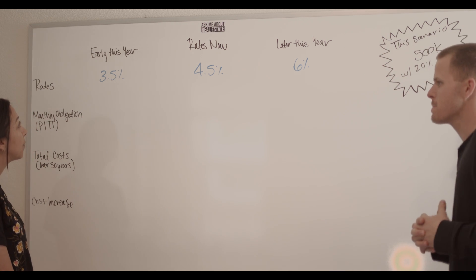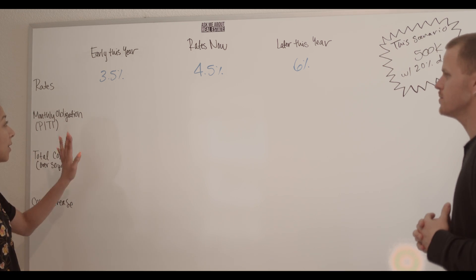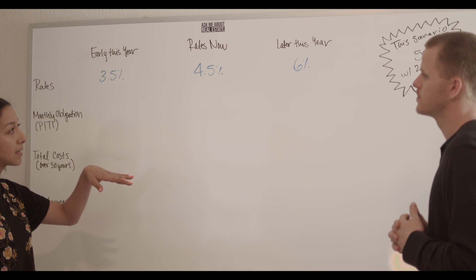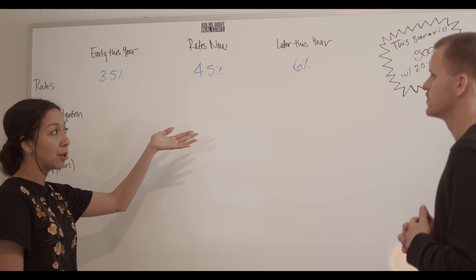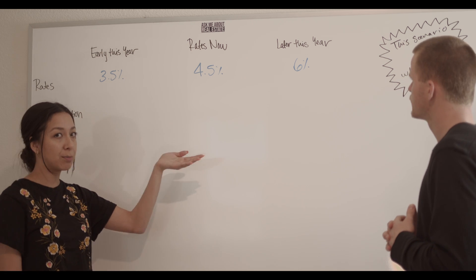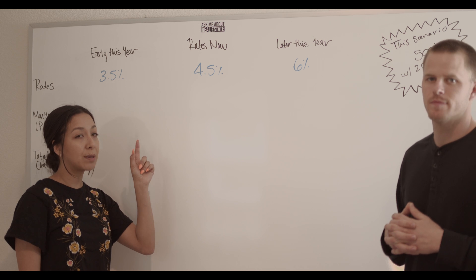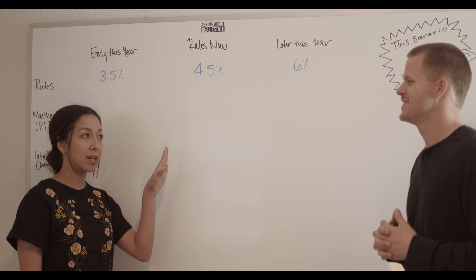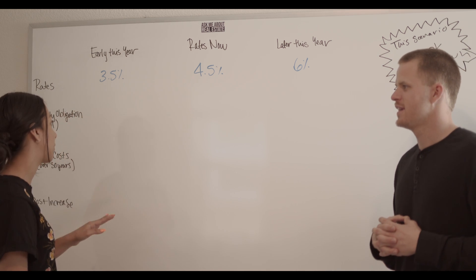Definitely. So we're using some estimates today: 3.5, 4.5, 6, $500,000 purchase price with 20% down. You don't always have to put 20% down, you can put a small amount. But for numbers sake, 20% takes away that mortgage insurance, so it's nice, clean numbers for us.